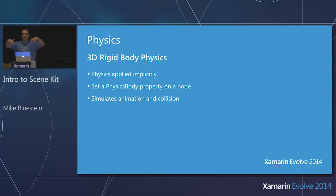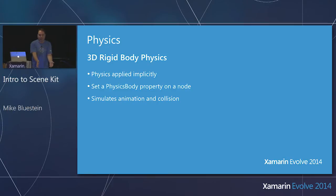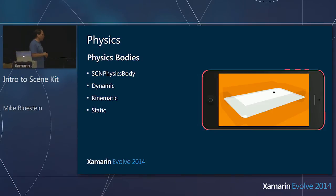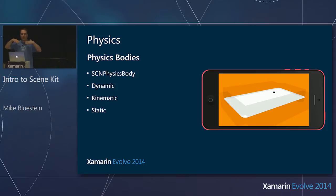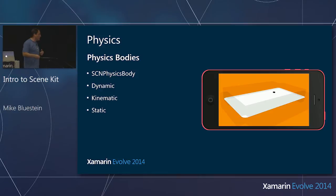All you have to do is set a physics body property on the node and the physics simulation happens implicitly. The physics simulation handles animating based on gravity, applying forces, and collisions. There are different types of physics bodies — you create an instance of SCNPhysicsBody using a factory method: dynamic, kinematic, or static.